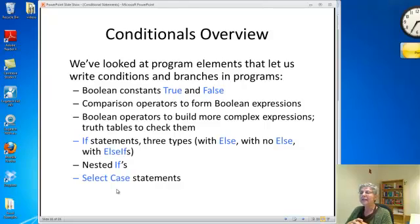Let's think about what we've looked at. We've looked at program elements that let us write conditions and branches. First, Boolean constants true and false. Then comparison operators to form Boolean expressions from things like numbers. Boolean operators to build more complex expressions. Those Boolean expressions are used as conditions in if statements. We looked at three types of ifs: with else, with no else, and with else ifs. Then nested ifs where we have an if inside an if. Finally, select case statements. This is the basics of conditionals. Now we're going to use these to write more interesting programs.